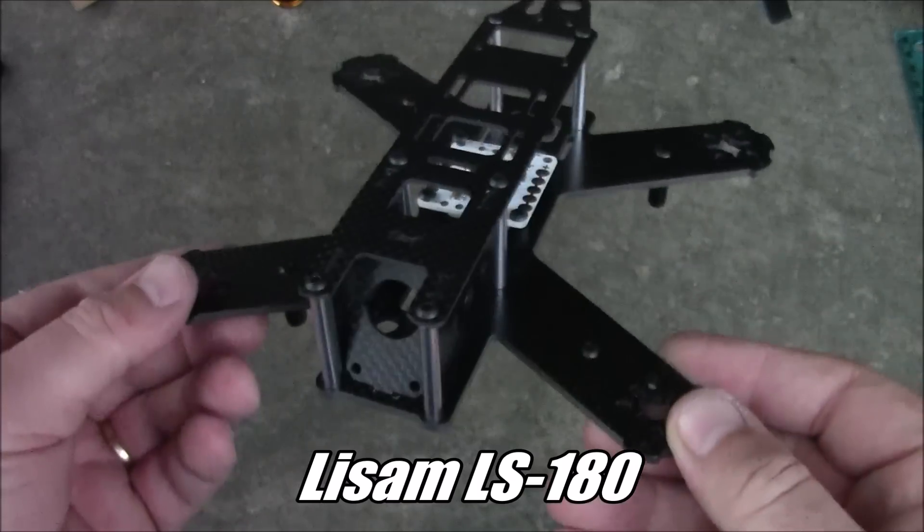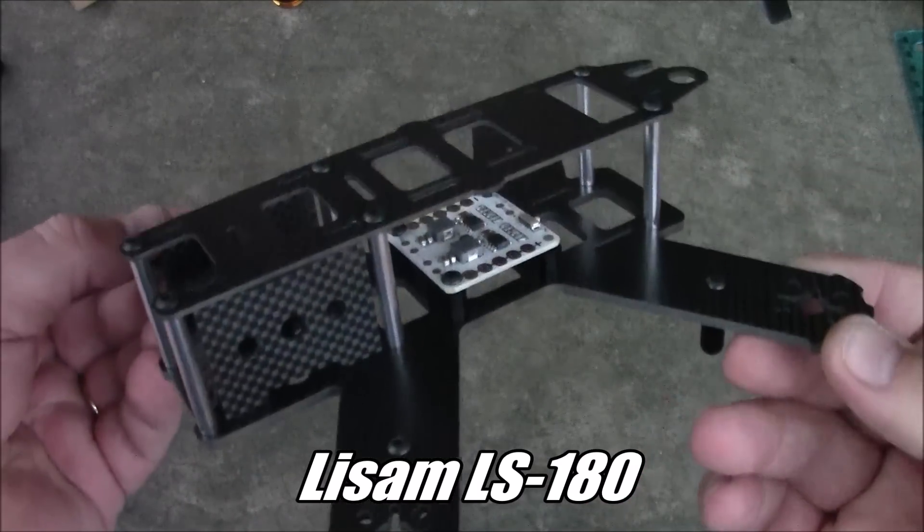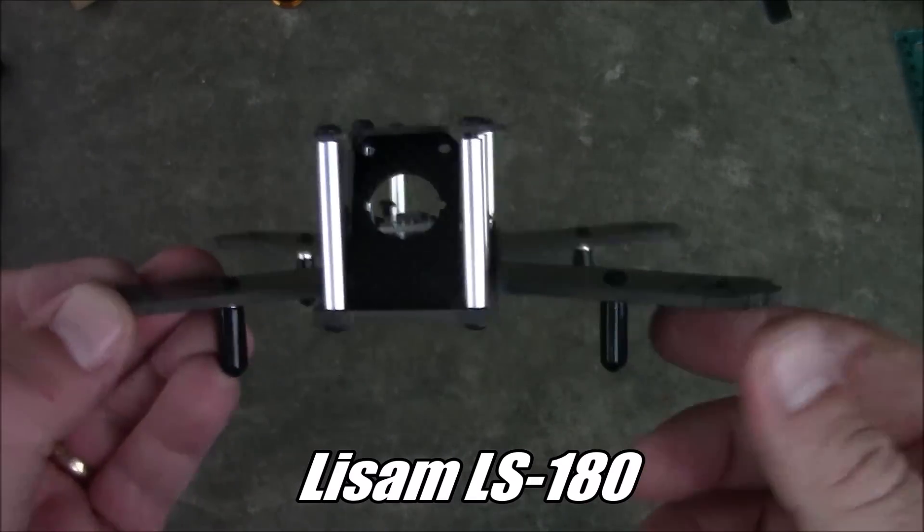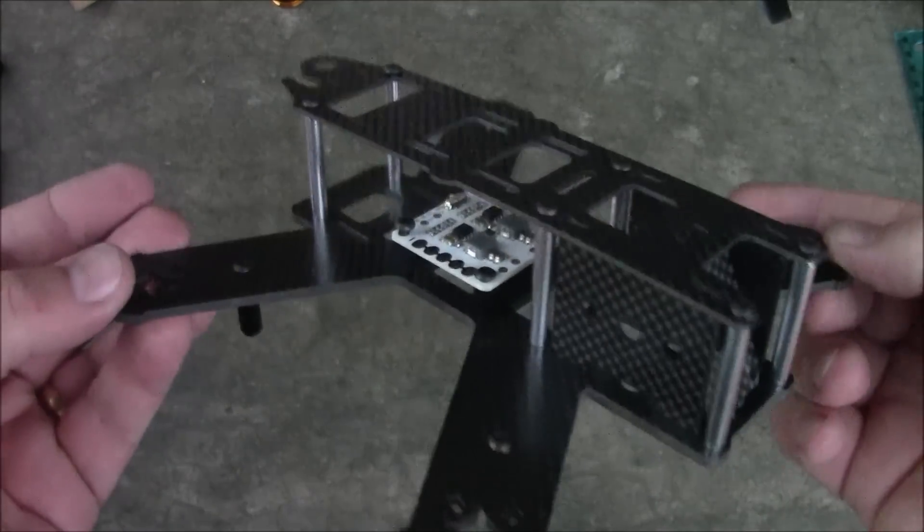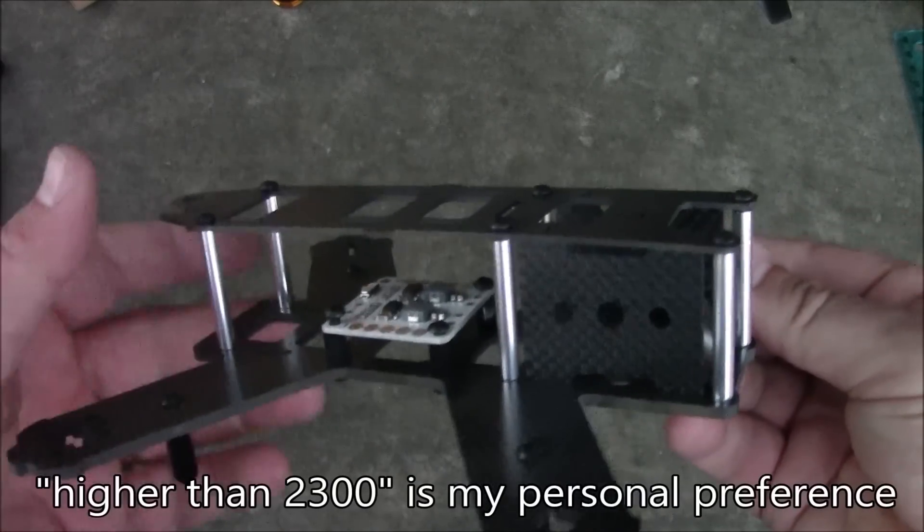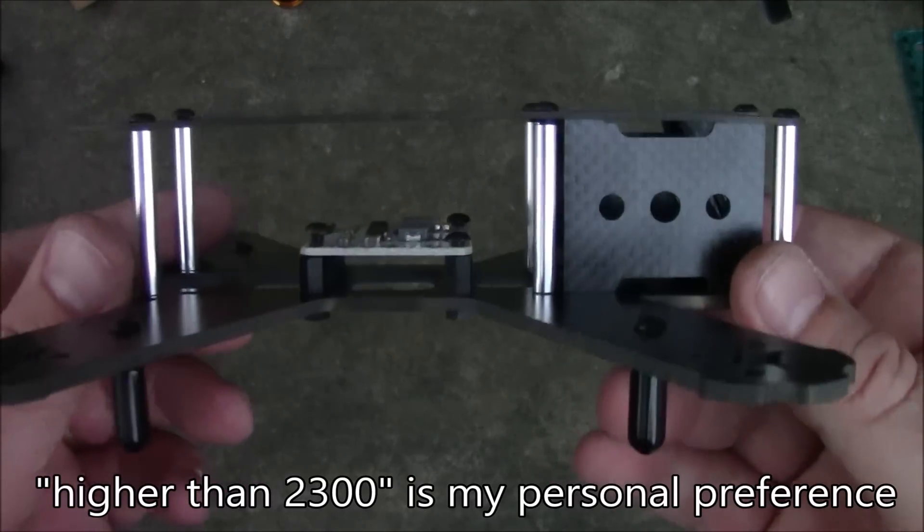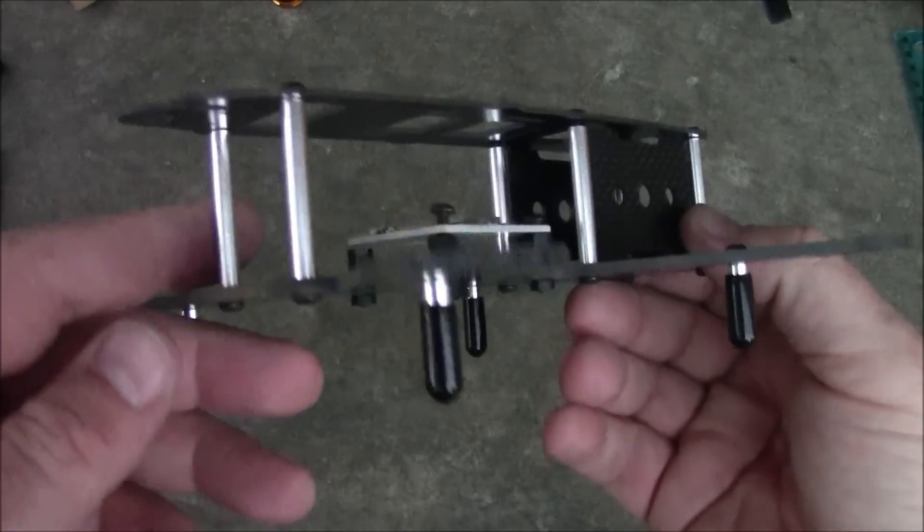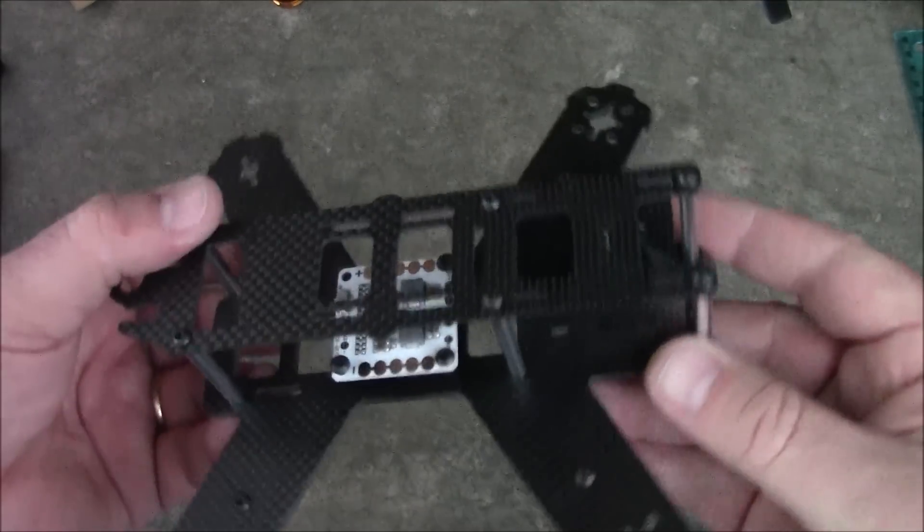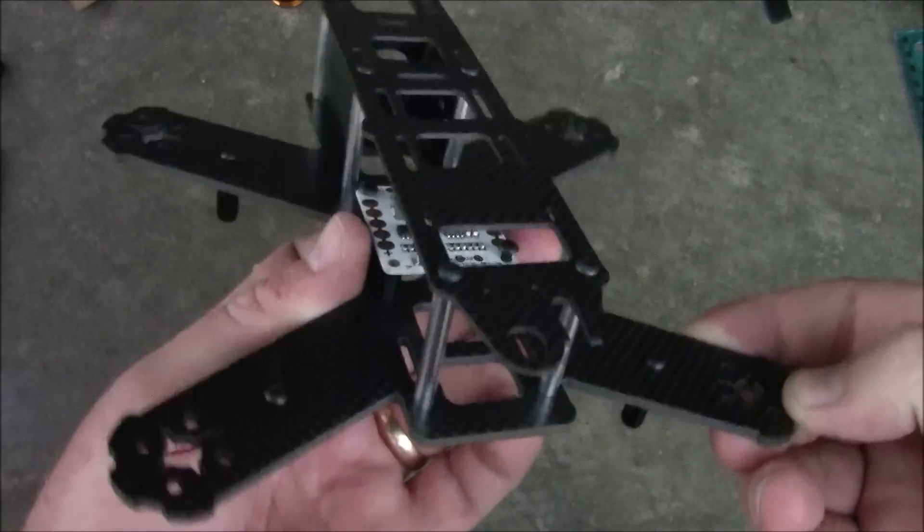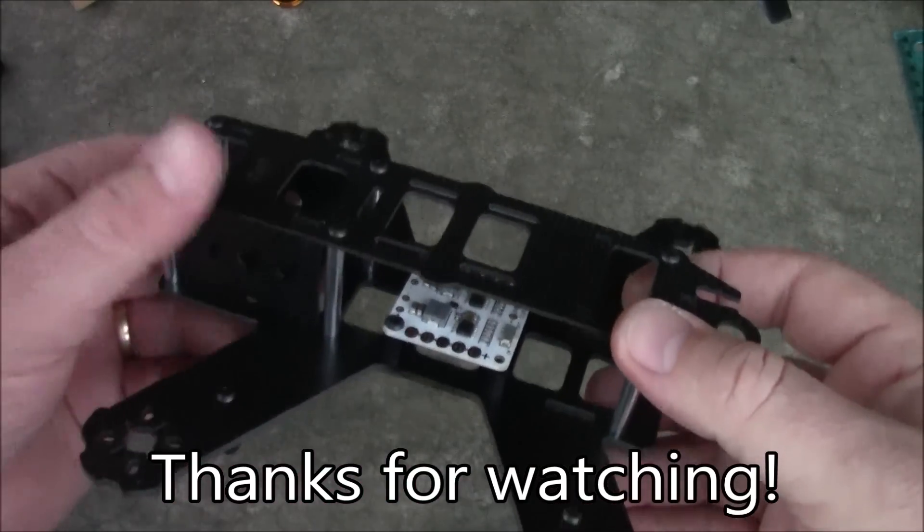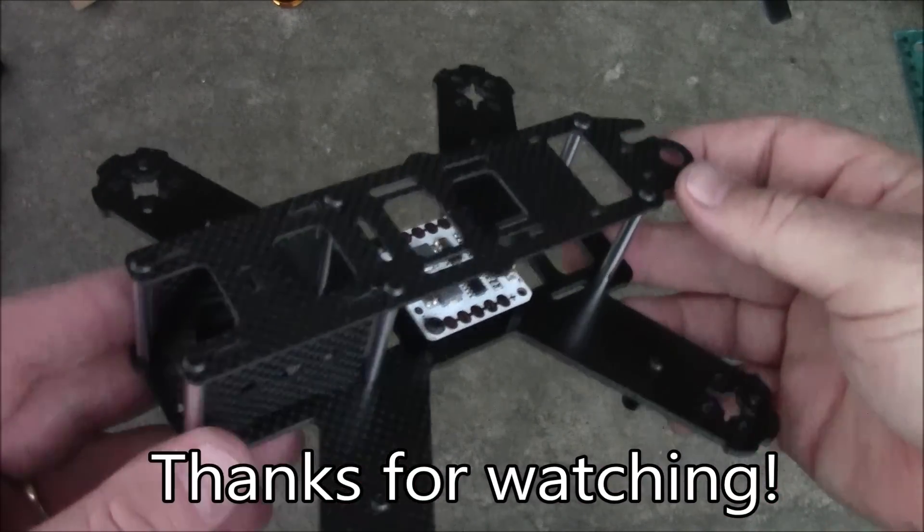So this is the LS 180. I think I'm actually going to build this one out. I got to order some higher KV 1806 motors or maybe some 2204 higher KV motors. Anything higher than 2300. Preferably like 2600 or 2700 or even those 3200s if I can make myself eat the cost on those. But gosh that hurts. Anyway LS 180 from Banggood. If you have any questions about this leave them in the comments. I'll try to help you out as best I can. And as always thanks for watching.